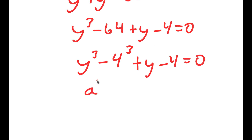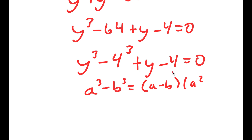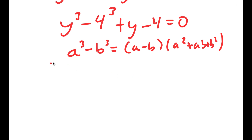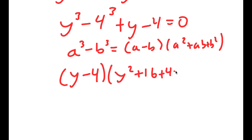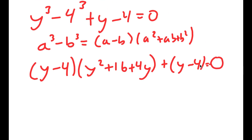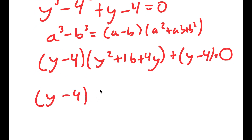Using the difference of cubes formula — a cubed minus b cubed equals (a minus b)(a squared plus ab plus b squared) — I can factor y cubed minus 4 cubed as (y minus 4)(y squared plus 4y plus 16). Adding the remaining (y minus 4) term and factoring out (y minus 4) gives (y minus 4)(y squared plus 4y plus 16 plus 1).